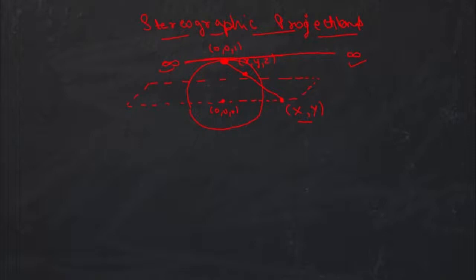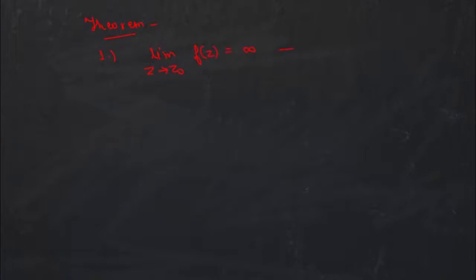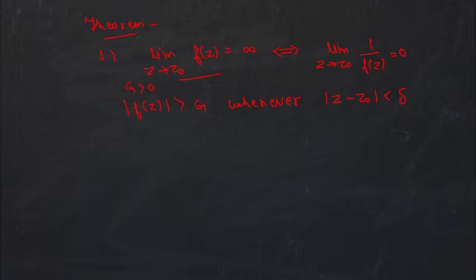Now we will discuss some theorems on limits at infinity. The first theorem states: the limit as z approaches z₀ of f(z) equals infinity if and only if the limit as z approaches z₀ of 1/f(z) equals 0. What this expression means is that |f(z)| is greater than some sufficiently large number g, whenever |z − z₀| is less than δ, where g > 0 and δ > 0.